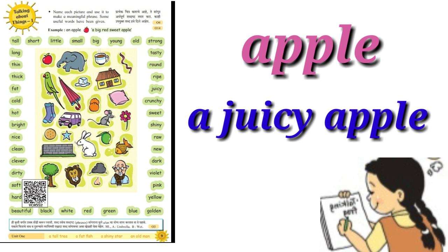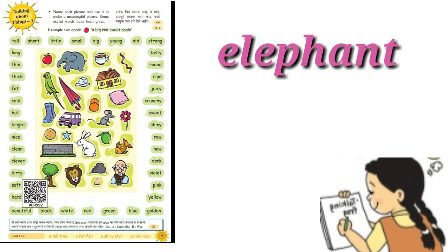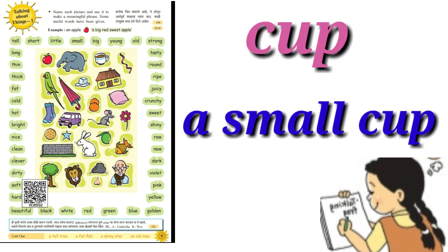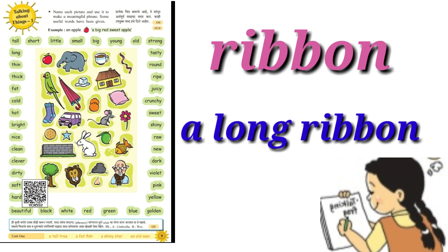Apple — a juicy apple. Elephant — a fat elephant. Cup — a small cup. Ribbon — a long ribbon.